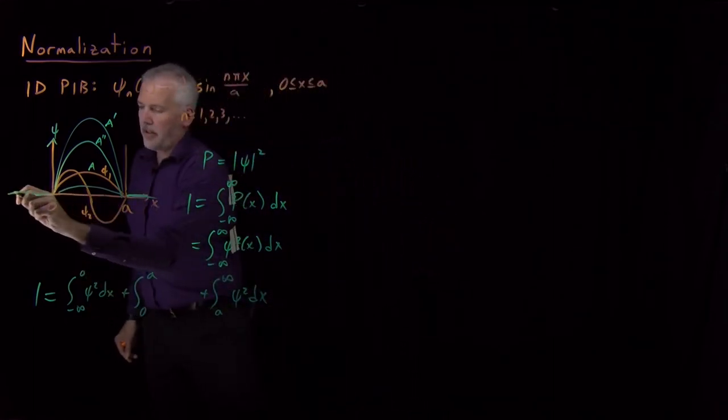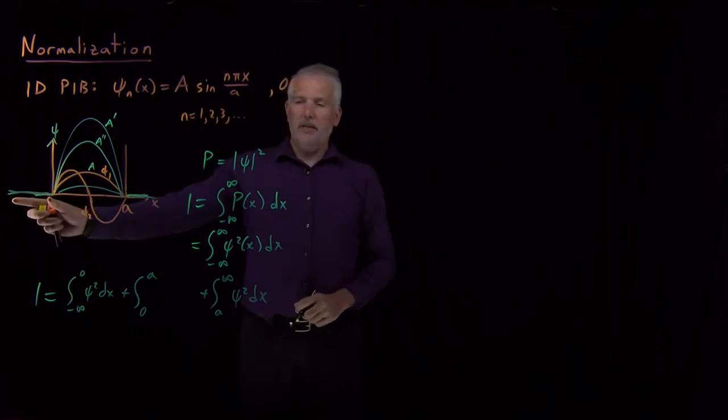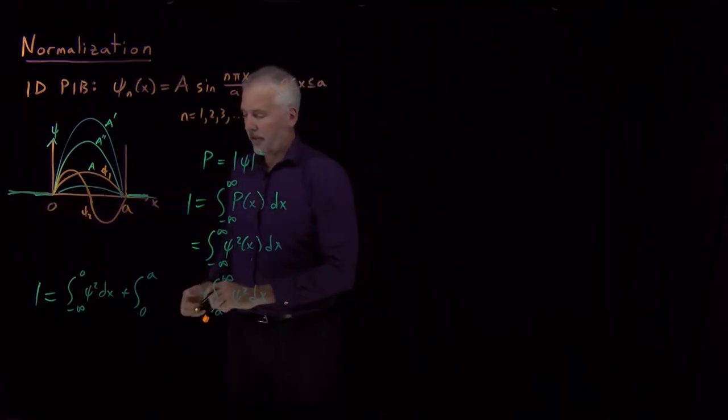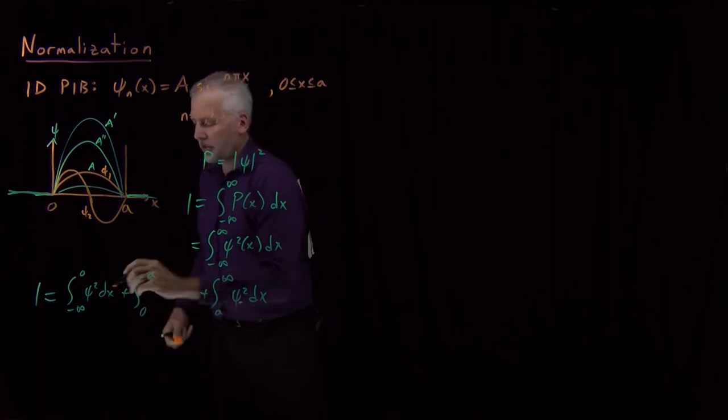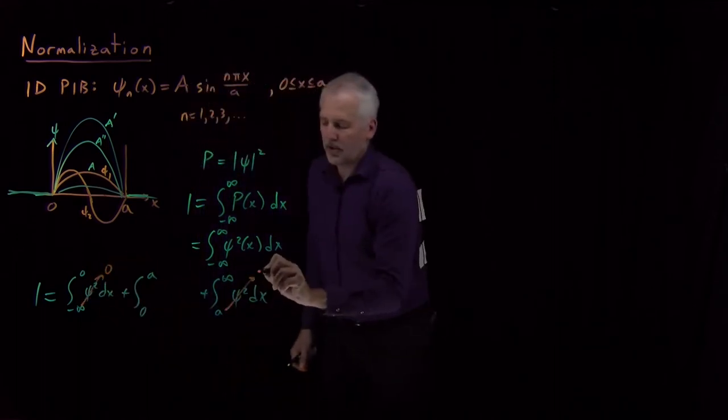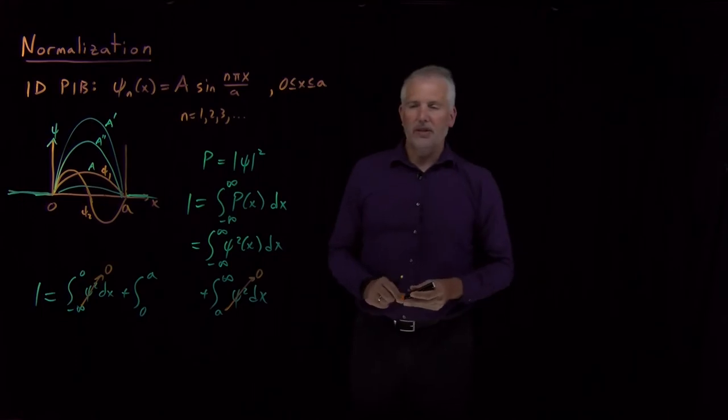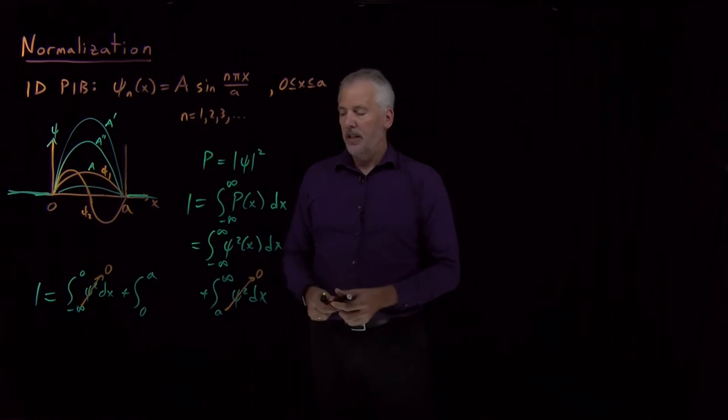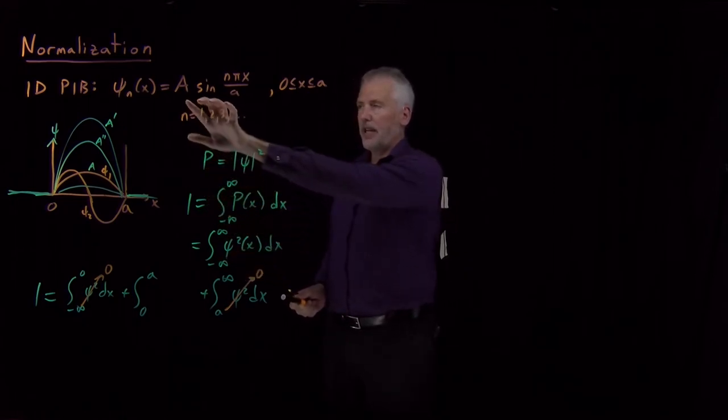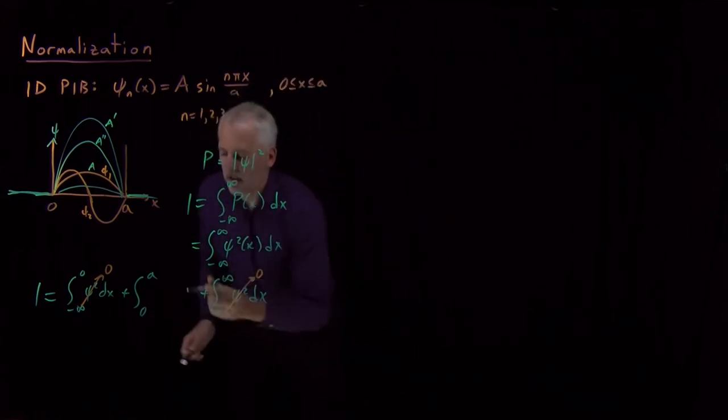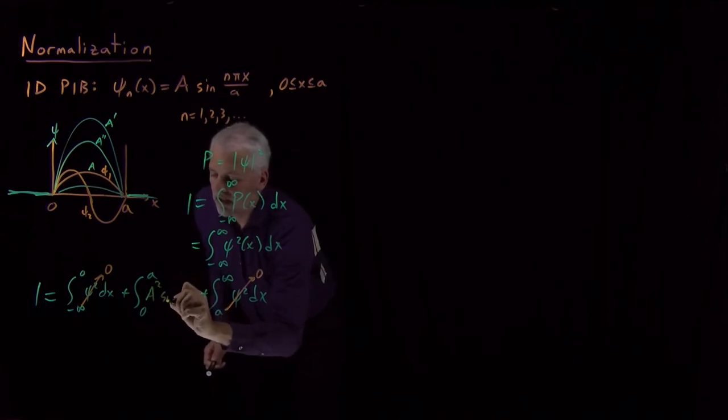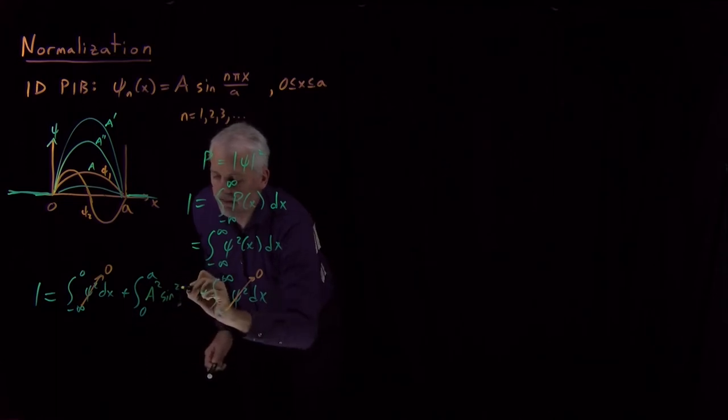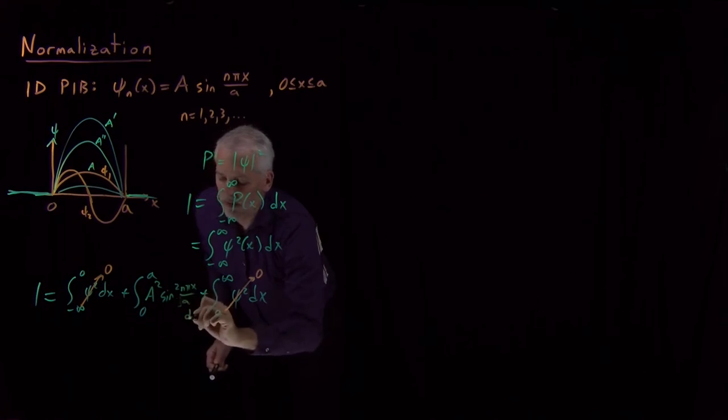I can integrate ψ squared from negative infinity to zero, so I integrate this portion of the curve. The area under this green line, when I square it, is just going to be zero because the wave function is zero. This whole piece goes away because the wave function is zero outside the box. So the only part of the integral I care about is the part inside the box. And what ψ squared looks like inside the box, if ψ is this function, ψ squared is going to be A squared sine squared nπx over a. And I have to integrate it with respect to dx.